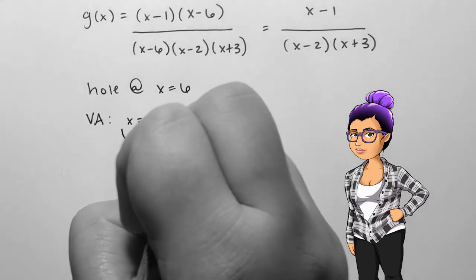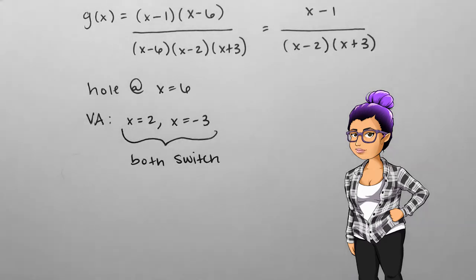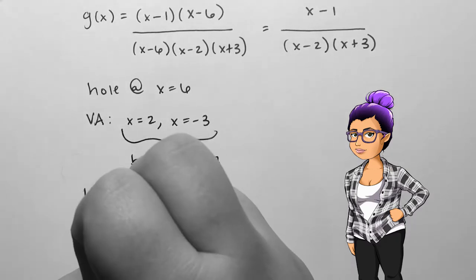I will also have a vertical asymptote at x equals 2, with switching asymptotic behavior, as well as x equals negative 3.